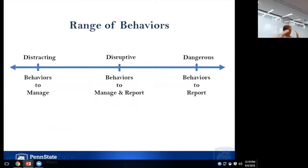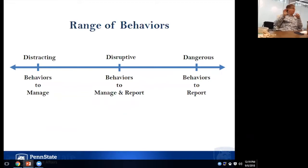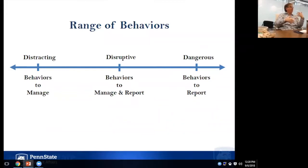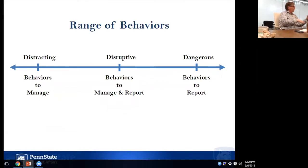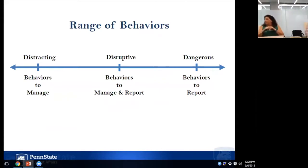One thing to add: as you look at these categories, this framework assumes this is the first time the behavior has happened. If this is a student you have a history with, how you interpret that same behavior may be different. You have contextual information that may move something from baseline distracting to feeling really different. So as we talk about these examples, we're talking from the context of this being the first interaction — because multiple occurrences may make a significant difference.